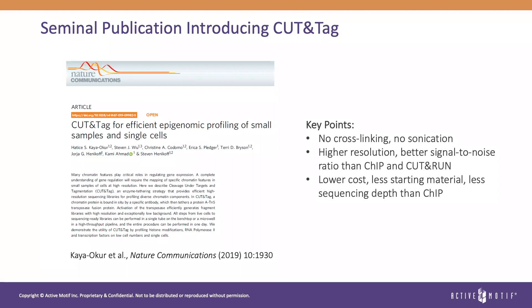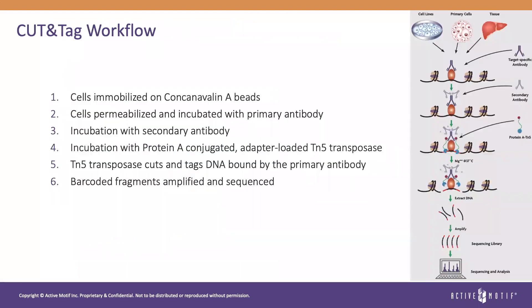Now let's take a look at the Cut-and-Tag workflow. First, intact cells are immobilized on concanavalin A beads. They're then permeabilized and incubated with a primary antibody that finds its target in situ. Then a secondary antibody binds to the primary antibody. Next, a protein A conjugated, adapter-loaded TN5 transposase binds to this antibody-chromatin complex. TN5 transposase cuts and tags the DNA bound by the primary antibody. Finally, barcoded fragments are amplified and sequenced.